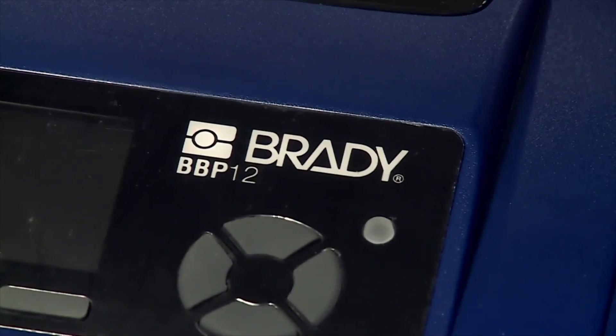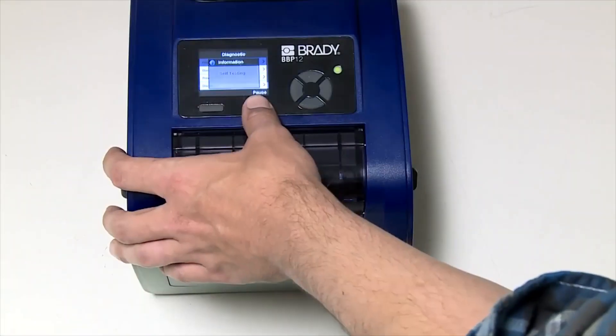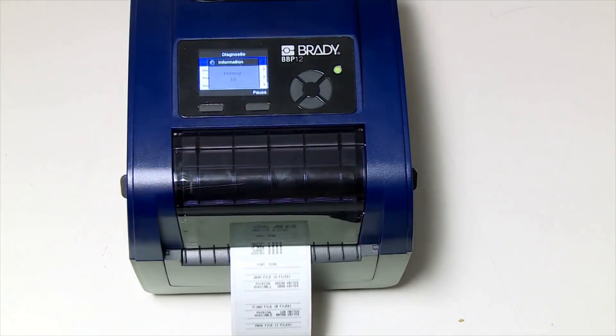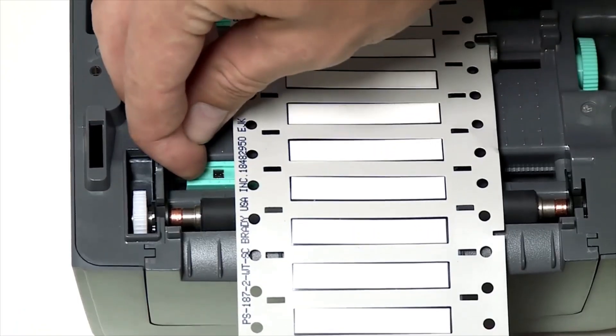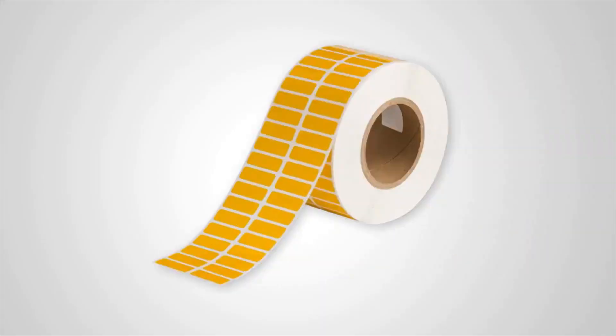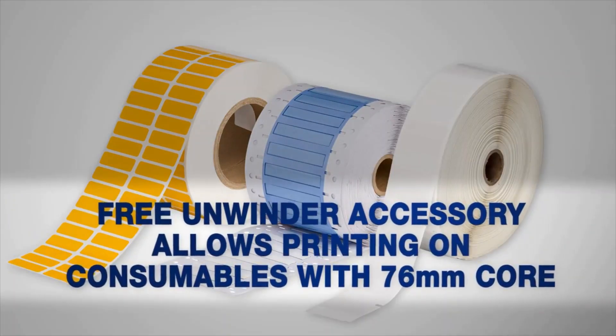The BBP12 printer offers a high print speed of up to 100 mm per second and, thanks to its adjustable sensors, can handle a wide range of durable, high-performance labels.